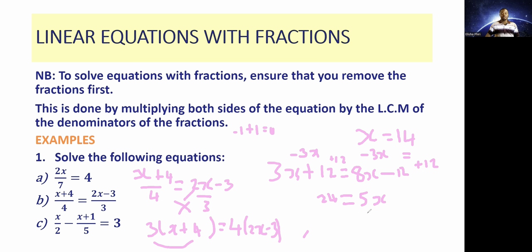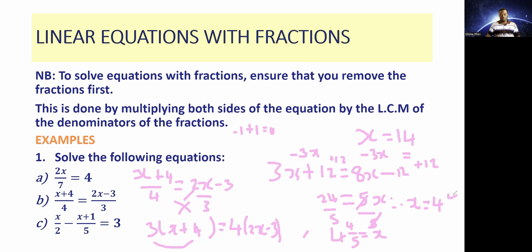So now we divide both sides of the equation by 5. The 5s cancel and we have x. So 5 into 24 gives us 4 remainder 4, which is 4 and 4 over 5. So we can say therefore x is equal to 4 and 4 over 5, and we're done.